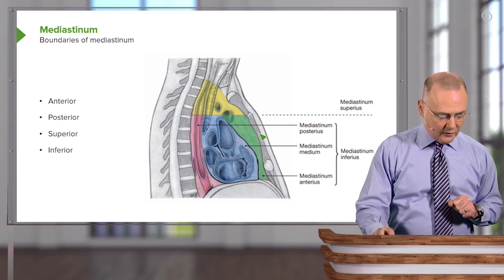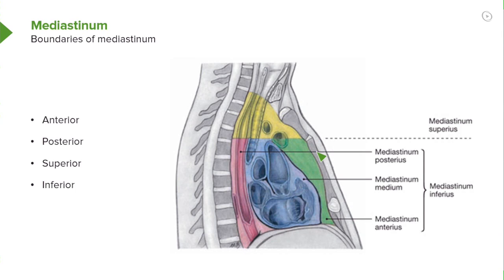The anterior boundary will be the sternum, and that is the structure here. The posterior boundary to your mediastinum will be all 12 thoracic vertebrae. T1 is here, 2, 3, 4, 5, 6, 7, 8, 9, 10, say a little bit of 11.